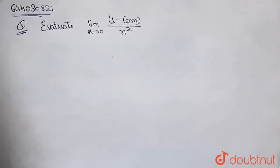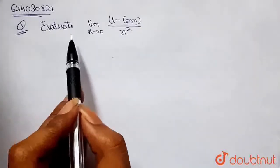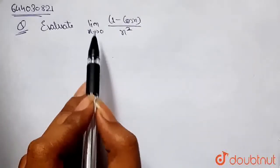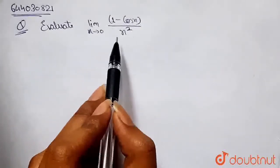Hello friends, so here is a question. In this question, we have to evaluate the limit as x tends to 0 of (1 - cos x) divided by x squared.